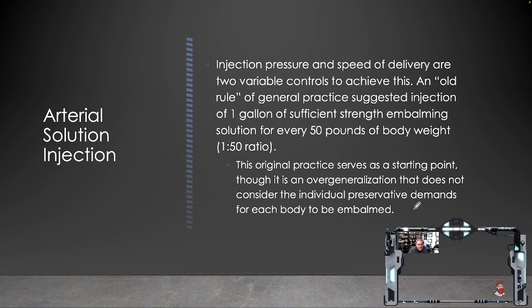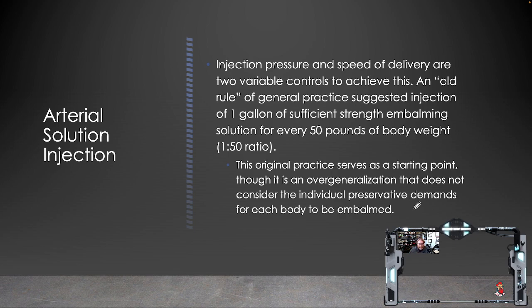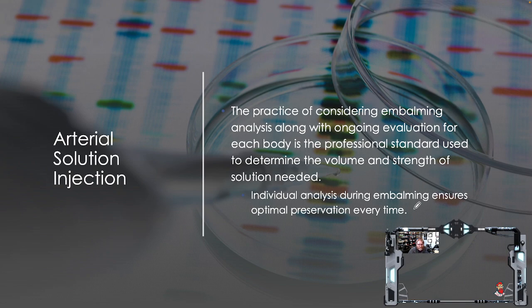Injection pressure and speed of delivery are two variable controls to achieve uniform distribution. An old rule of general practice suggested injection of one gallon of sufficient-strength embalming solution for every 50 pounds of body weight — known as the 50-pound rule. This original practice serves as a starting point, though it is an overgeneralization that does not consider the individual preservative demands for each body. The practice of considering embalming analysis along with ongoing evaluation for each body is the professional standard used to determine the volume and strength of solution needed.